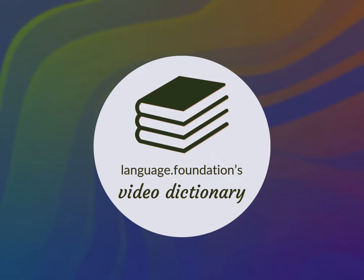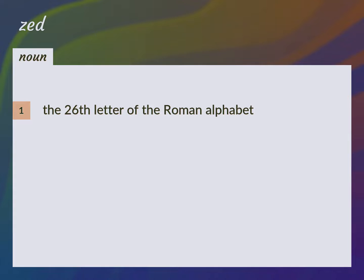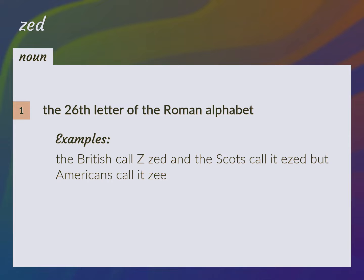Language.Foundation's Video Dictionary, helping you achieve understanding. The 26th letter of the Roman alphabet. The British call it ZED and the Scots call it EZED, but Americans call it ZEE.